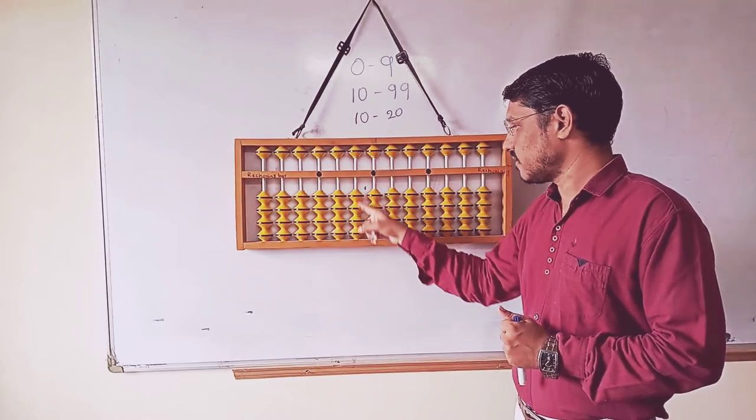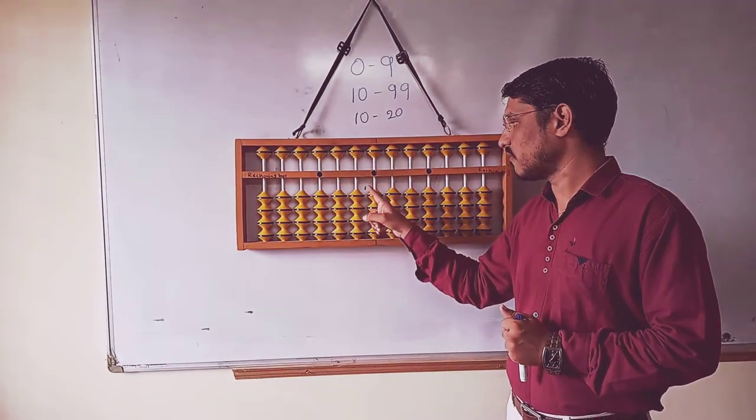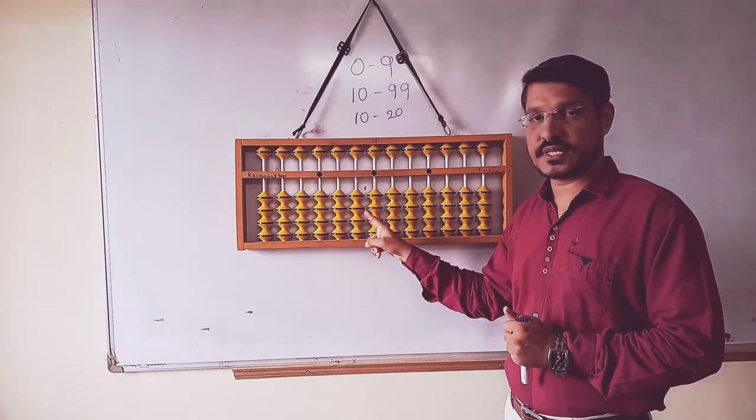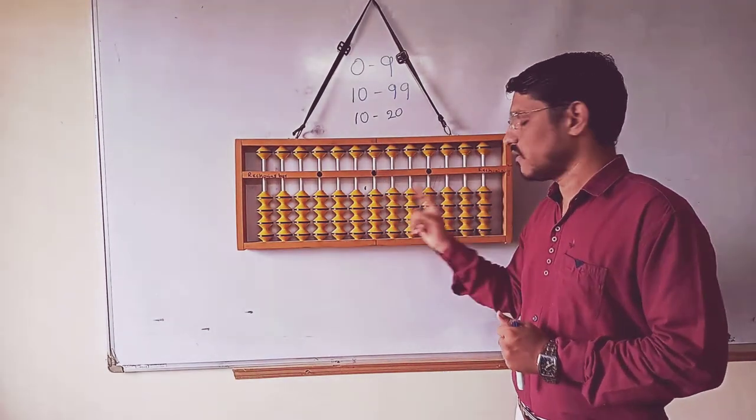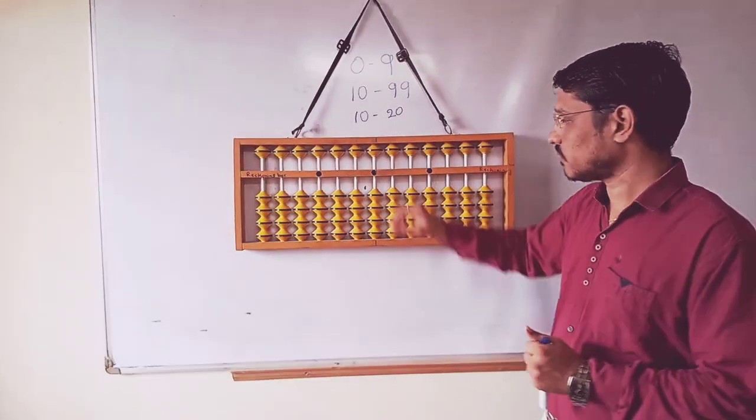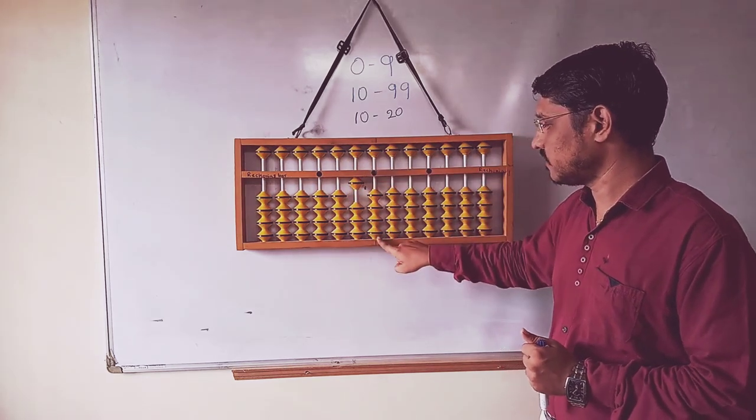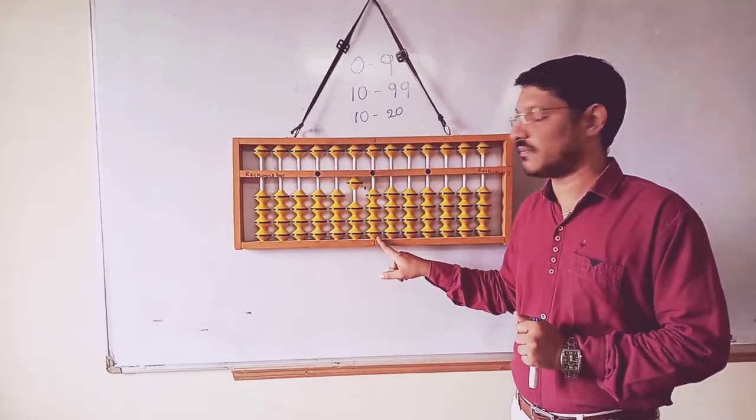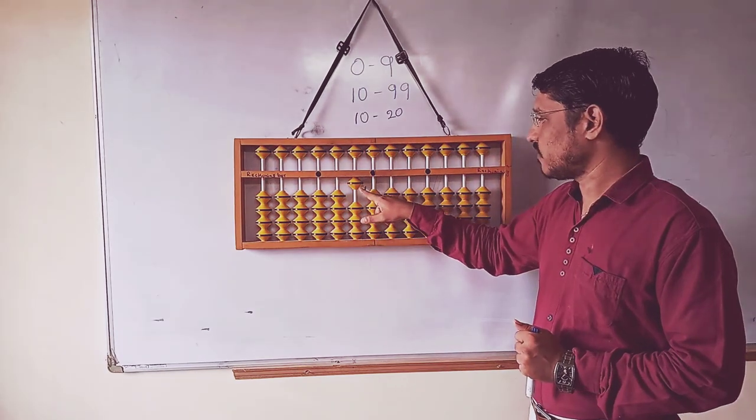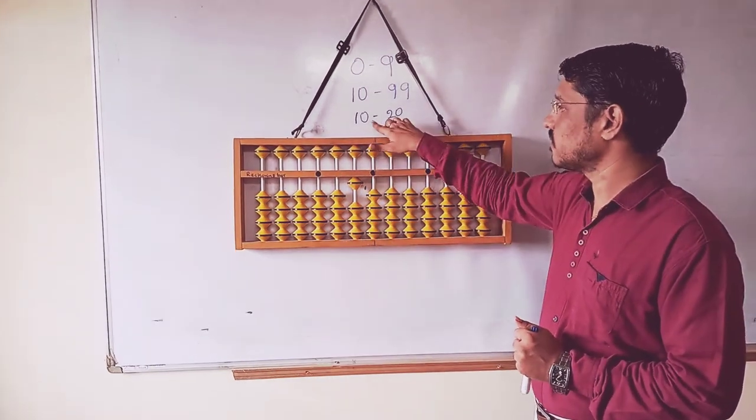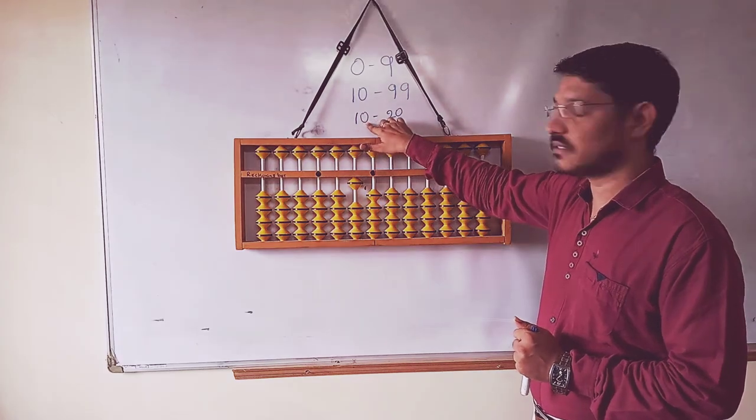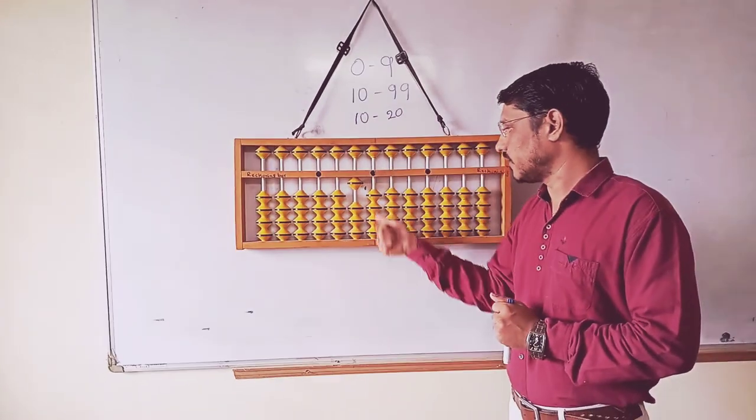This is my second row. Here 1, this point is 0 right now. So what is the value of this right now? 1, 0 means 10. That is 10.